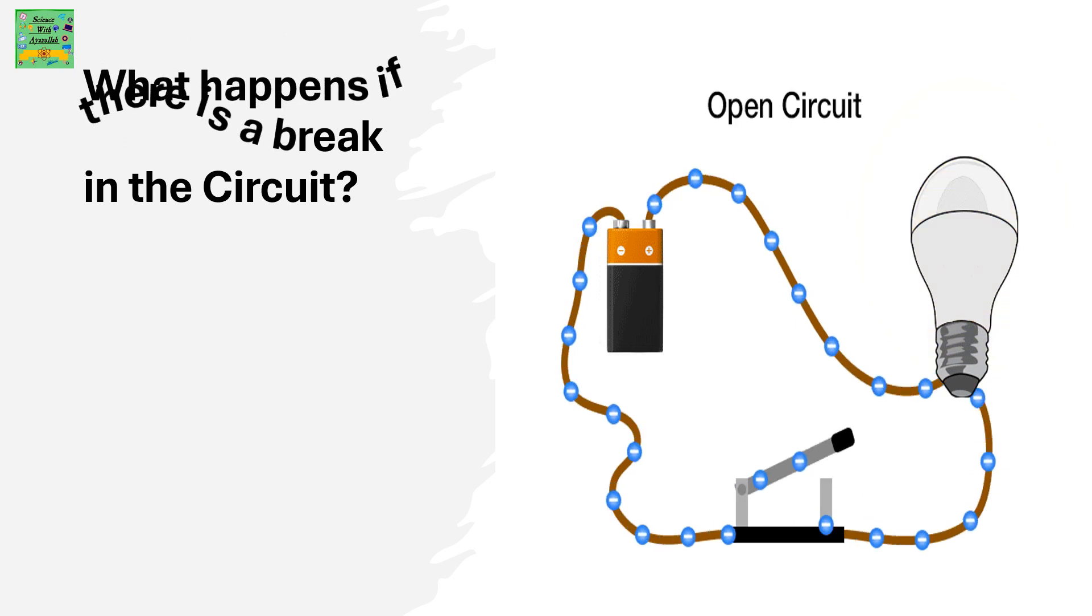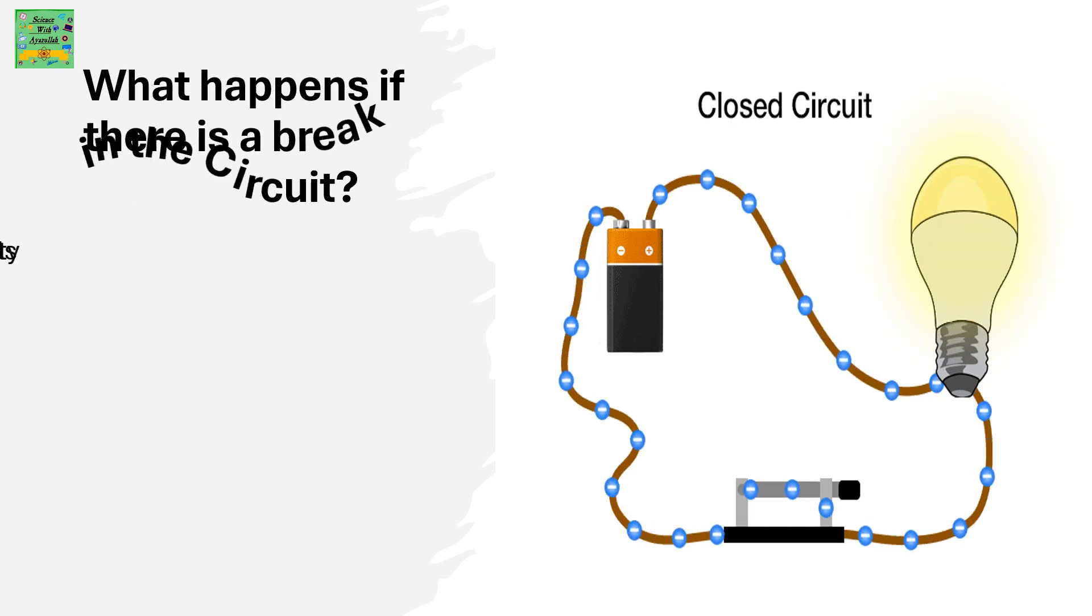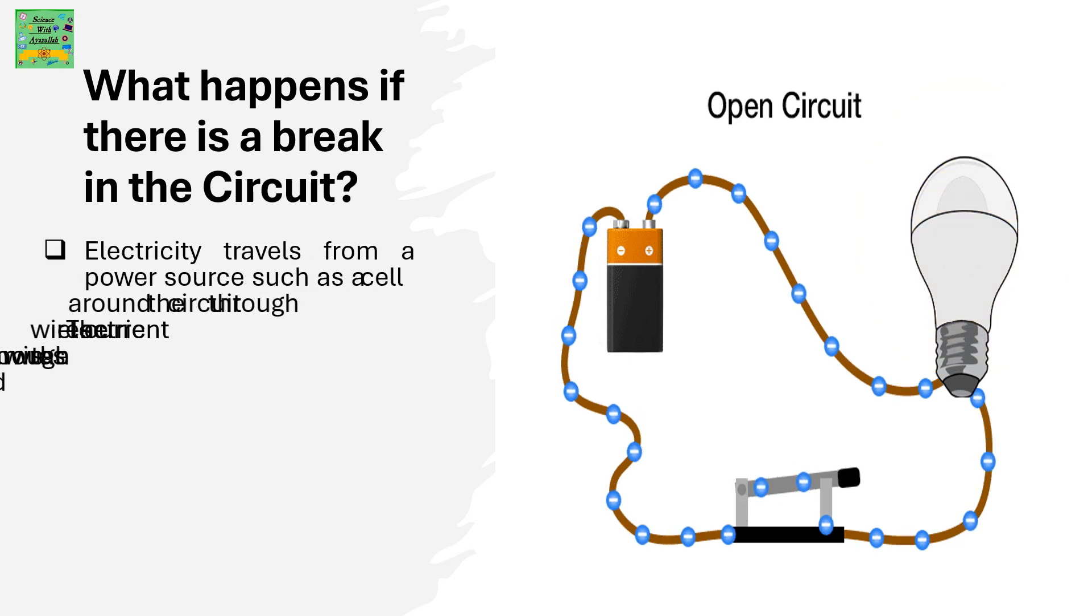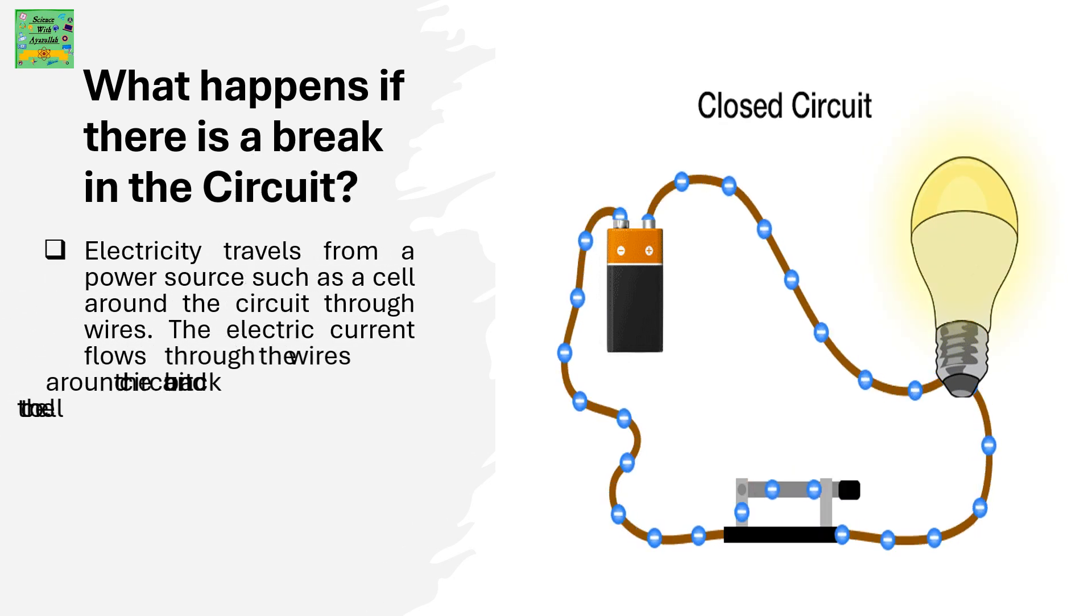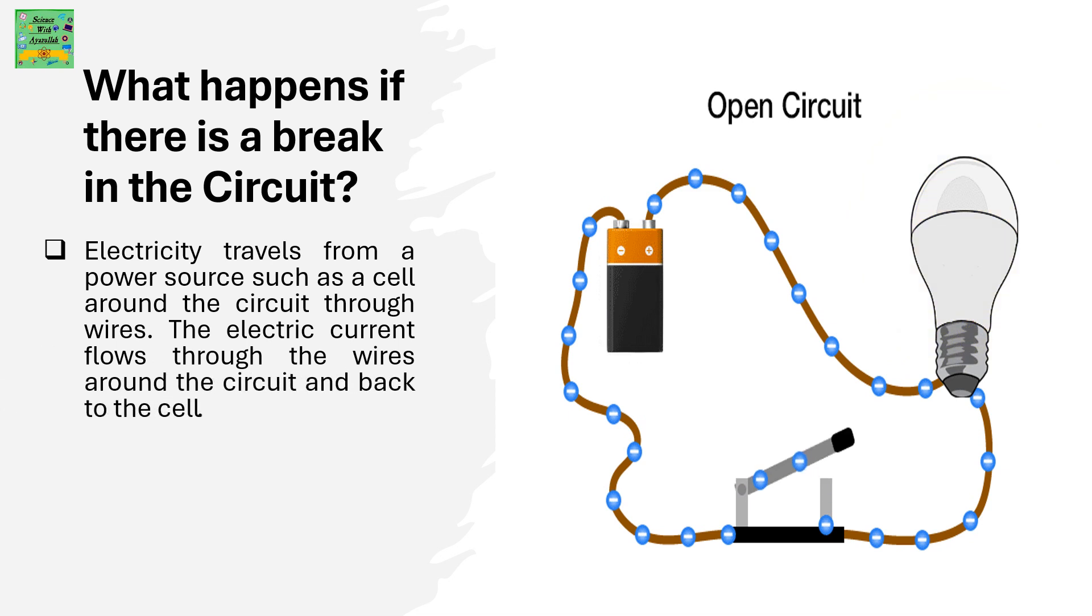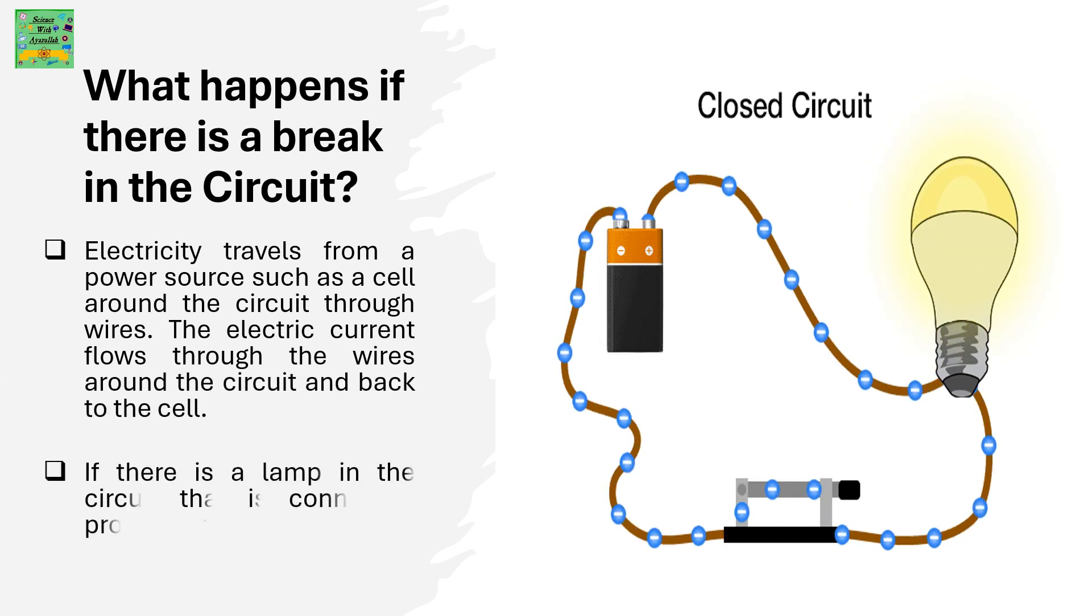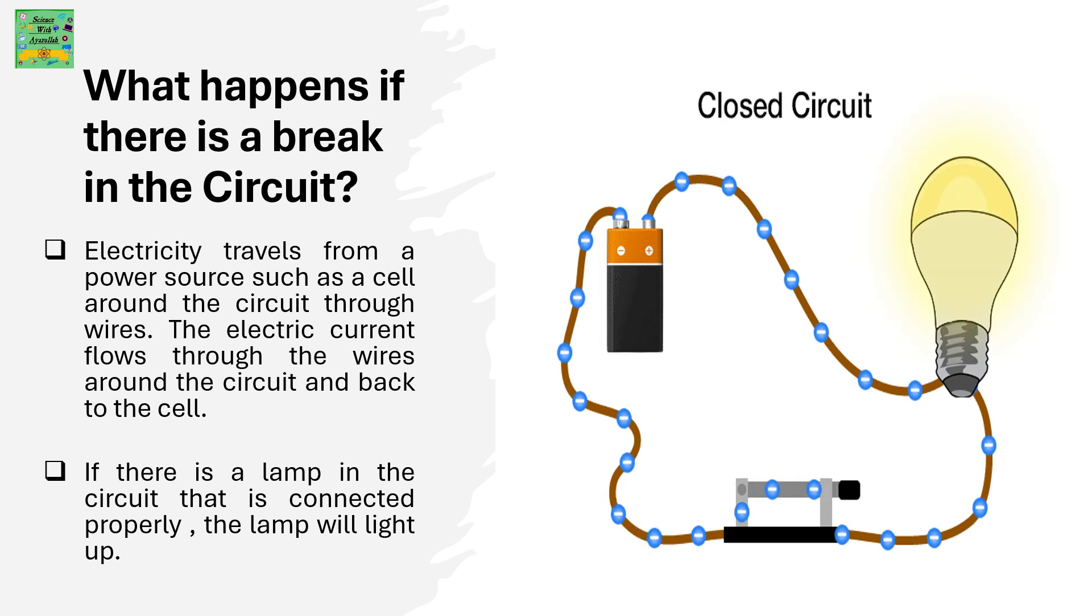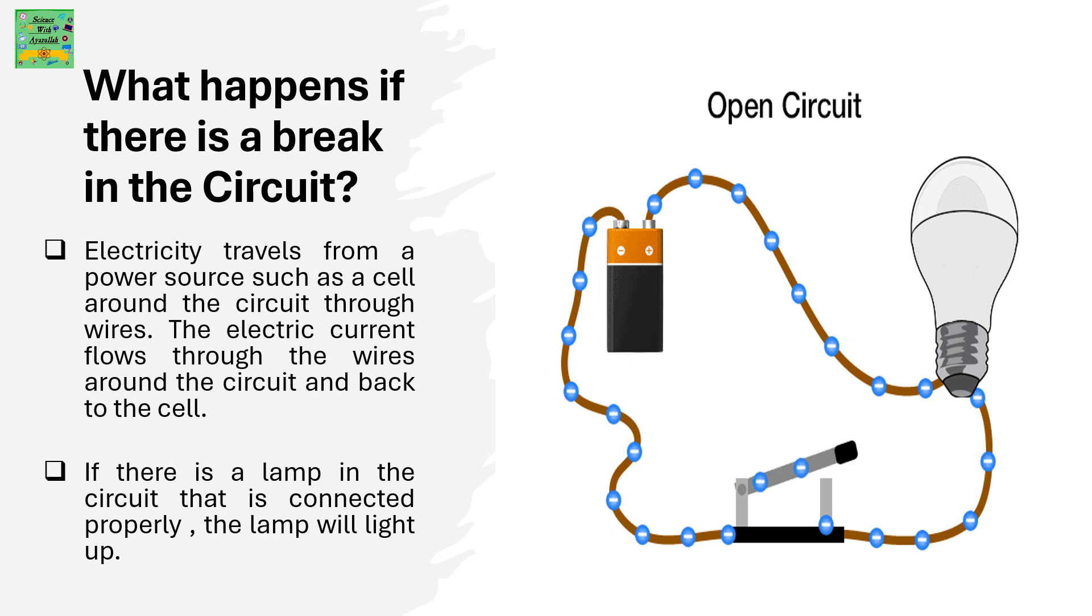What happens if there is a break in the circuit? Electricity travels from the power source around the circuit through wires. The electric current flows through the wires around the circuit and back to the cell. If there is a lamp in the circuit that is connected properly, the lamp will light up.